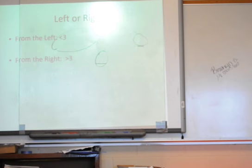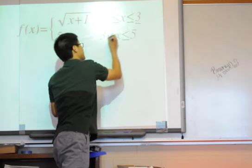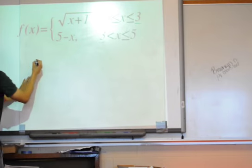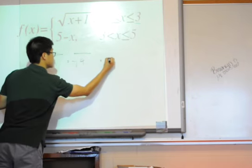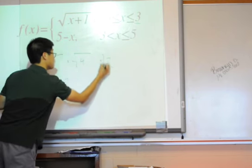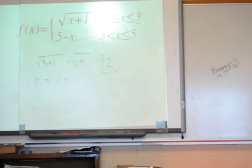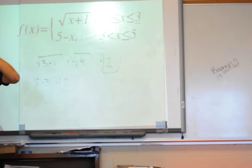This function has to equal this function at three, for this whole piecewise function to be continuous. So just a reminder... If I do... It is continuous. If it's less than three, it's from the... So whatever one is less than the domain restriction is from the left. So let's see... Square root of three plus one equals the square root of four. And that equals two. Five minus three equals two. So is this piecewise function continuous? Yes. Because when I plug in three into both of these equations, they equal each other. So that means they're connecting at that same spot.